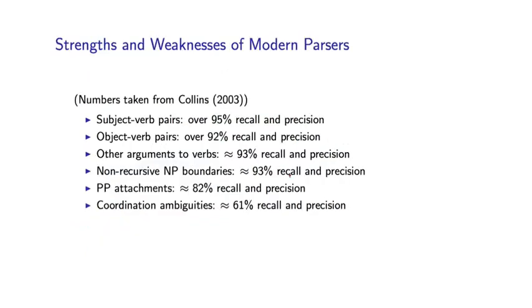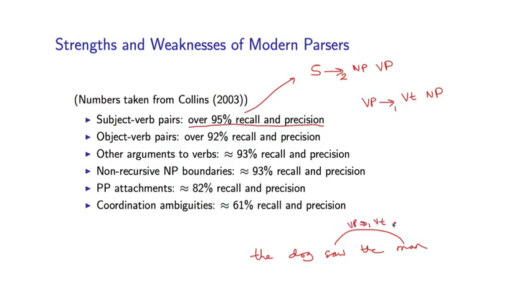And here are some numbers. So in fact, if we look at subject-verb pairs, so this is dependency of the following form, we do pretty well on these, we get over 95% recall and precision. If we look at object-verb pairs, so these are basically going to be of this type, VP1 goes to VT NP. So whenever I see a dependency like this, I have a relationship between a verb and its object. For example, if I say the dog saw the man, I'm going to have a dependency between saw and man labeled VP1 VT NP, because man is the object of saw. And again, these are recovered with pretty high accuracy, over 92% recall and precision.